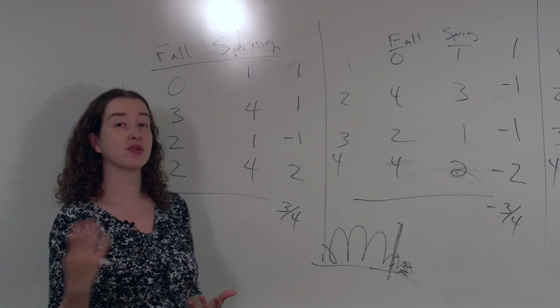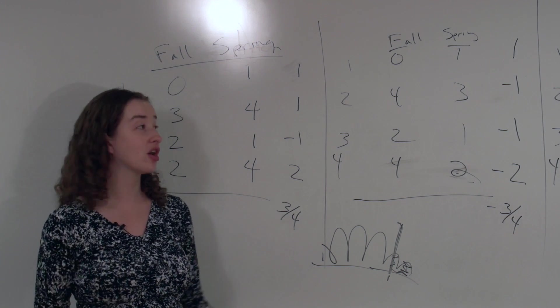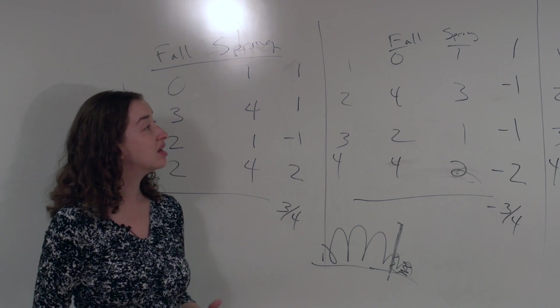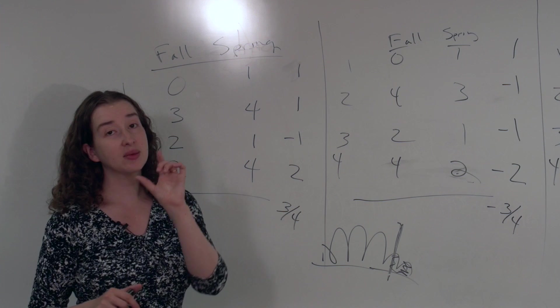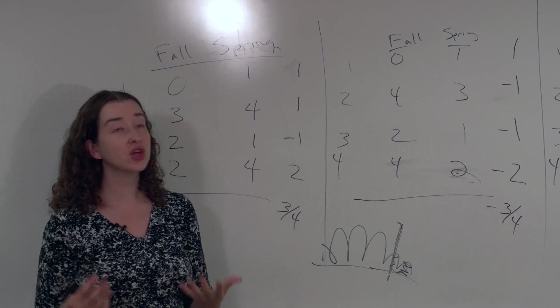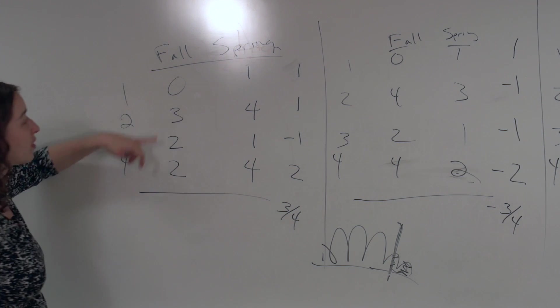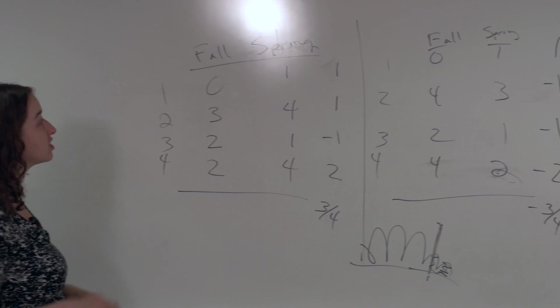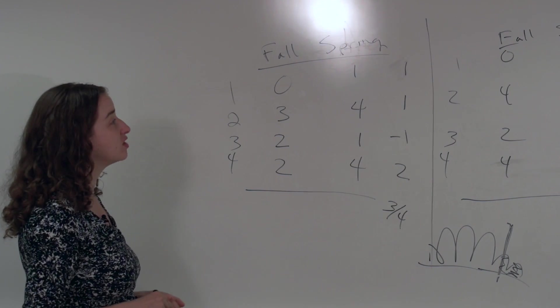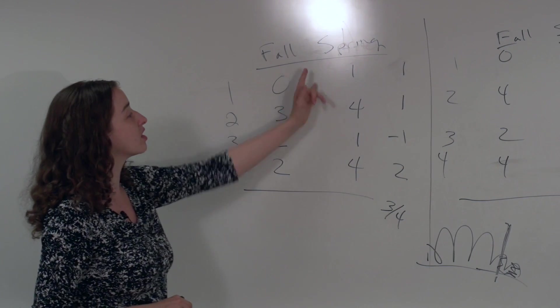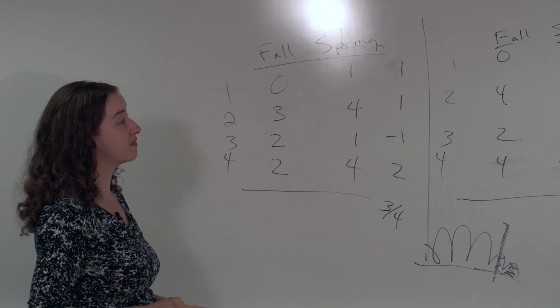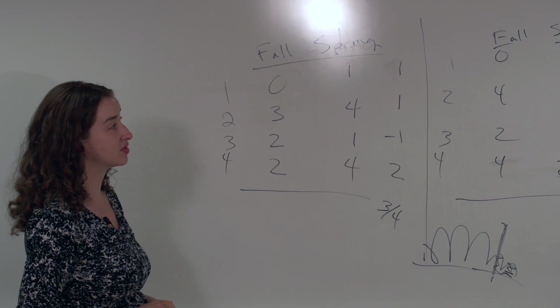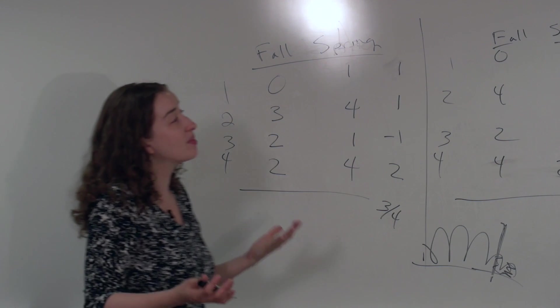This exactly follows the format of the randomization or permutation test that we talked about when we didn't have paired data. The only thing that's changed is the permutations that we're willing to look at are the ones that maintain the rows. We're not just going to mix up all the values between the two groups. We're only going to look at possible ways to flip the fall and spring for particular students.